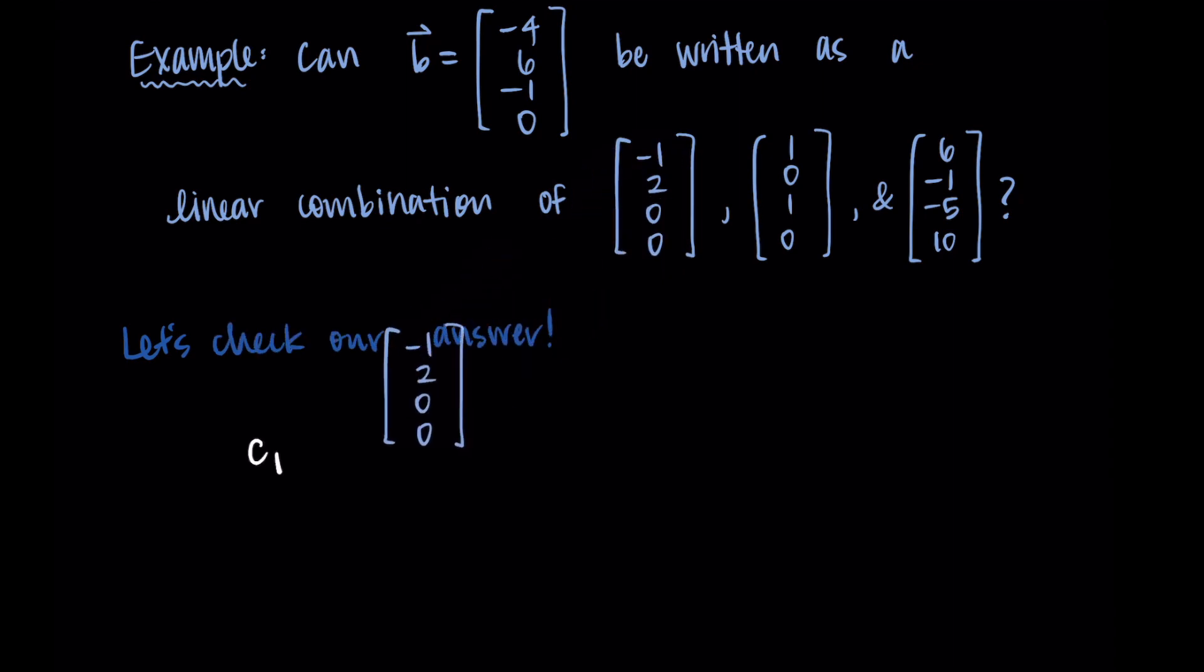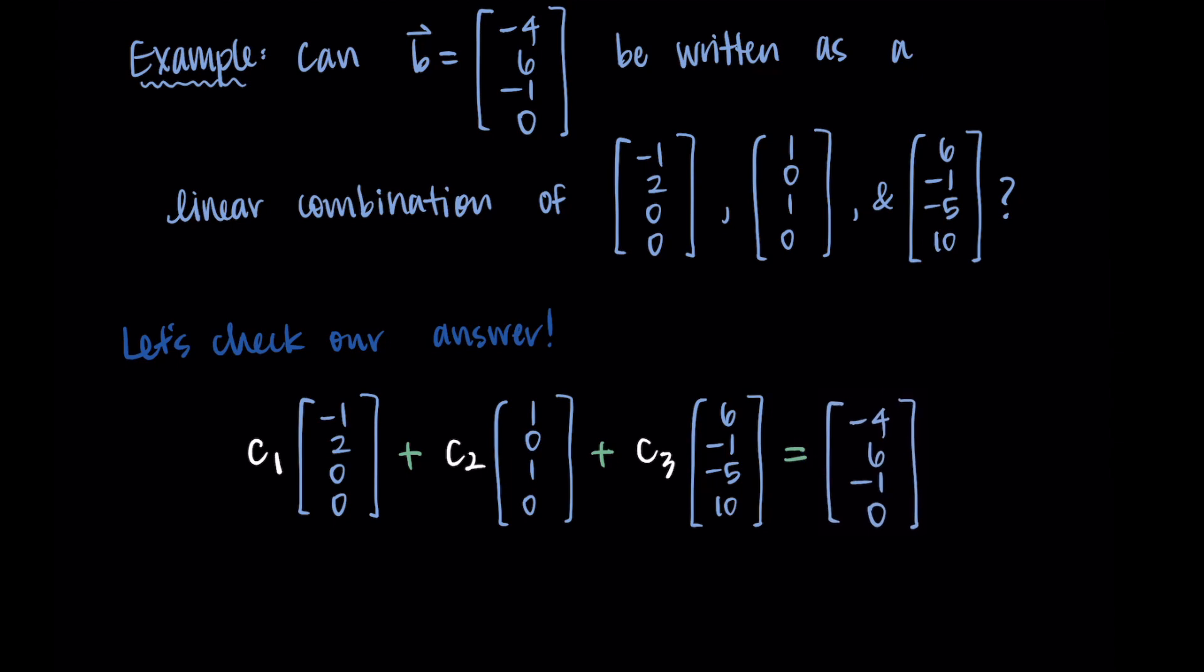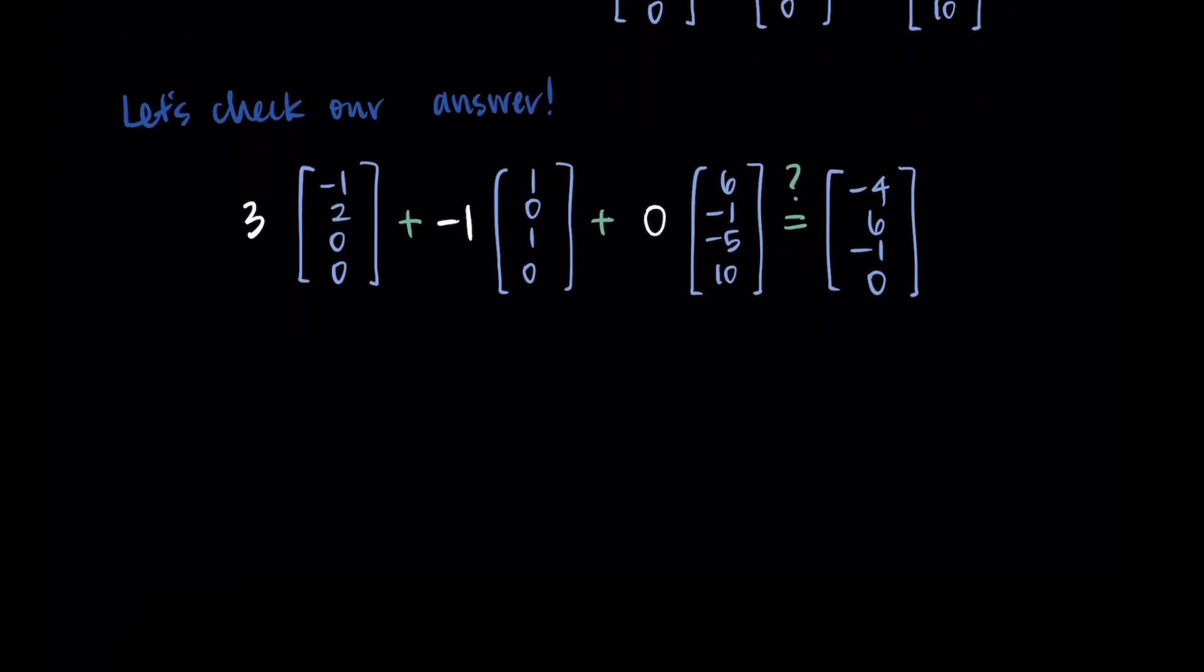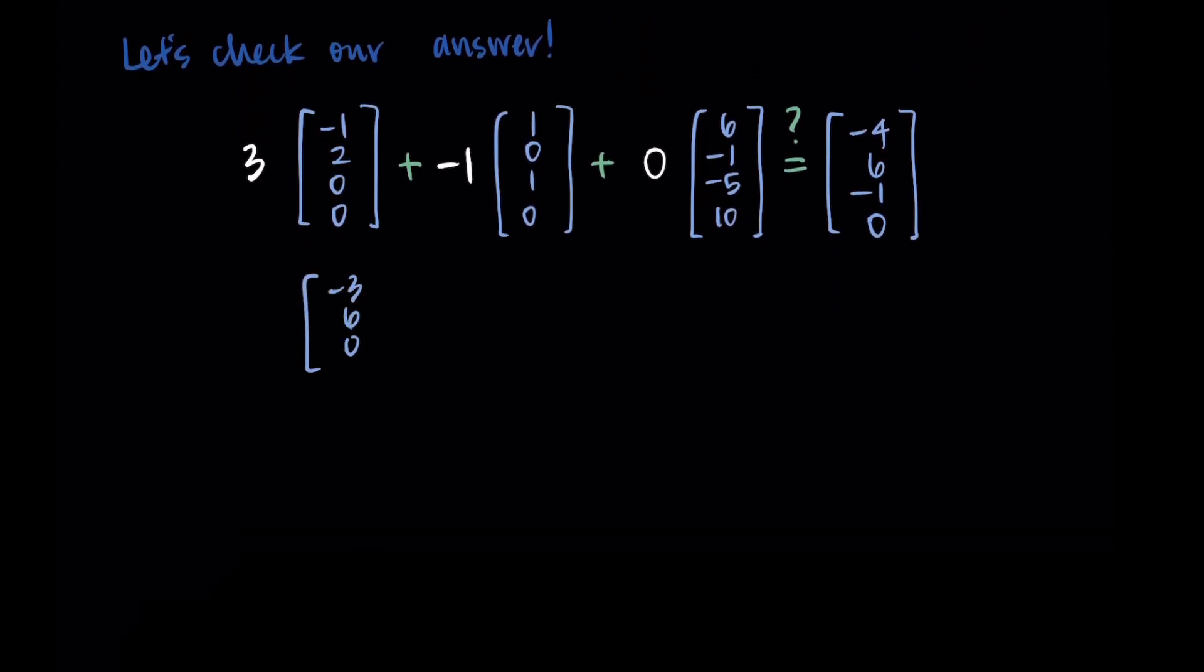So I'm going to replace c1, c2, and c3 with the values I found: 3, negative 1, and 0. Then we can just add and simplify this vector equation to make sure that we're getting a true statement. So when I distribute the 3 to the first vector, I'm getting negative 3, 6, 0, 0.